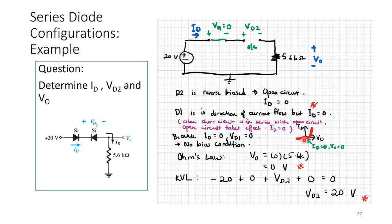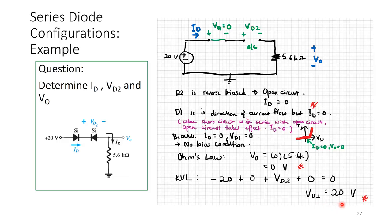Applying Ohm's law across the 5.6 kilohm resistor: since ID equals 0, the voltage drop Vout is 0 volts. Doing KVL: minus 20 plus VD1 plus VD2 plus Vout equals 0. Substituting VD1 equals 0 and Vout equals 0: VD2 equals 20 volts.